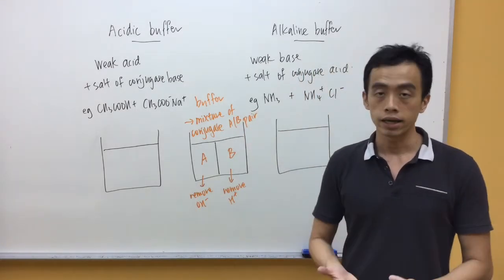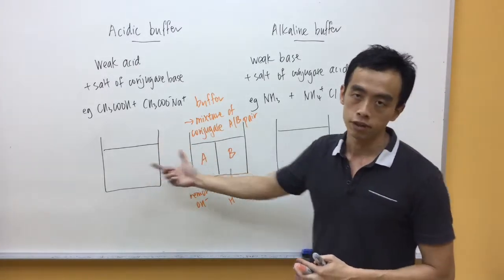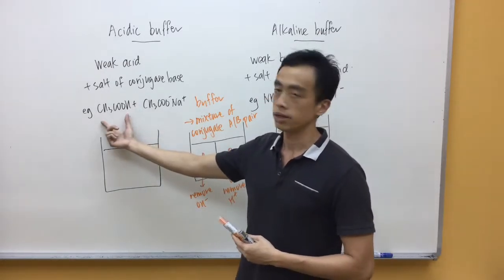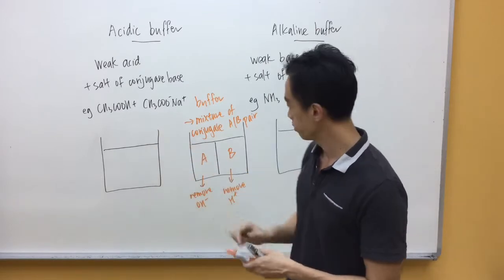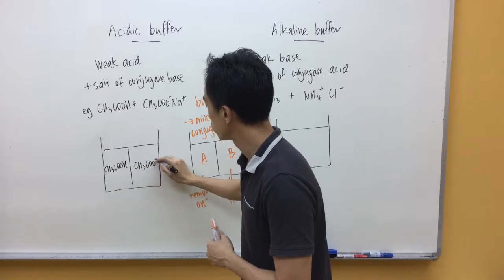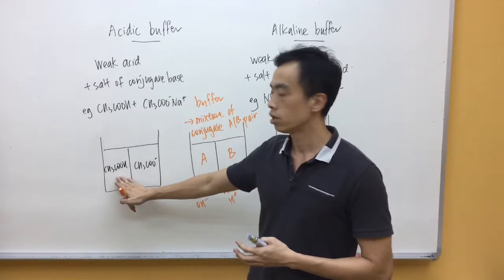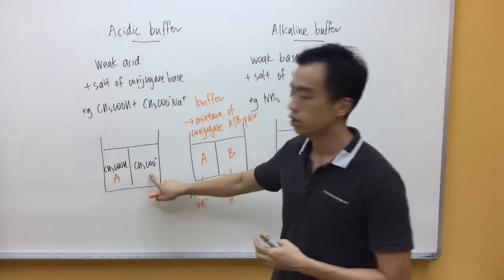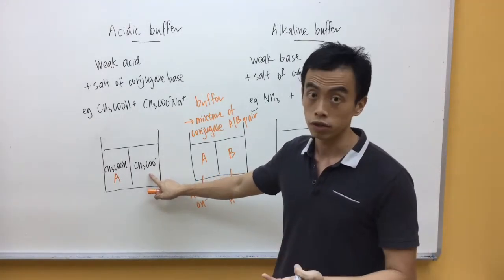Now, you apply this idea that a buffer is essentially a mixture of a conjugate acid-base pair to both acidic and alkaline buffers. For my acidic buffer, I have a mixture of CH3COOH and CH3COO-. If you consider the nature of CH3COOH, this is the acid. CH3COO- is the conjugate base of CH3COOH, so obviously it functions as the base.